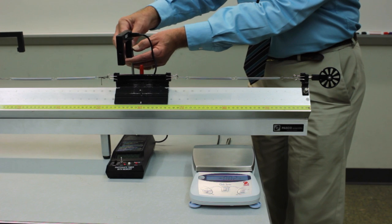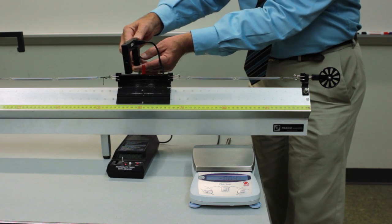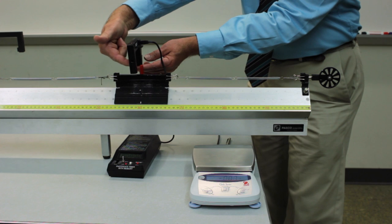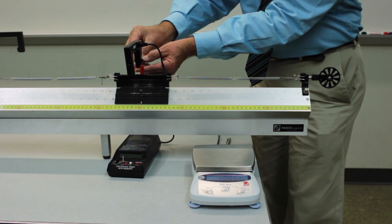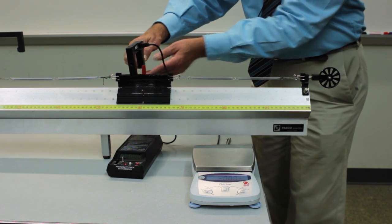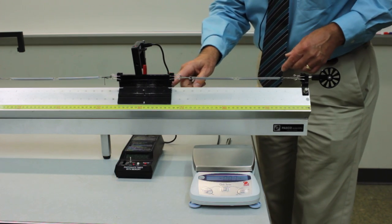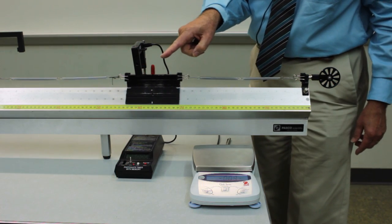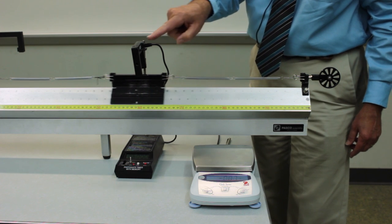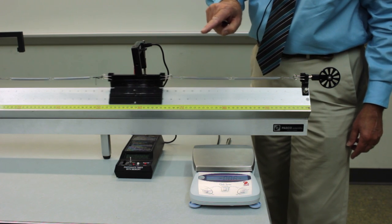What you want to do is adjust the height of the gate. It slides up and down on this post. Adjust the height of the gate so that the light beam is interrupted by the little peg on top of the glider. And you'll see that it's in the right position when the little peg passes through the gates. There is a little blinking light at the top indicating that it's working.